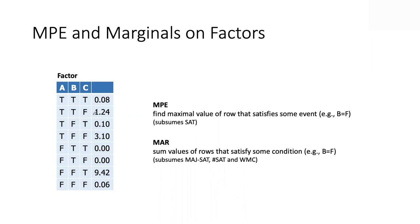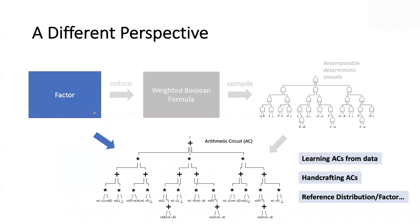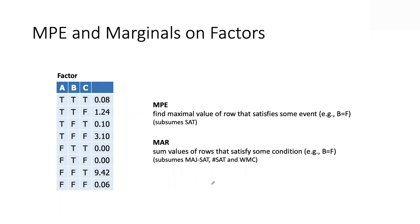We're going to fix this. Even though we're not going to talk about Bayesian networks or logic, we have to keep sight of the reference point. The reference point is a factor. Any computation you're doing has to be with respect to something. For us, that is a factor — a mapping from variable instantiations to non-negative numbers. A distribution is a special case of this, but it does not have to be a distribution. When I have a factor, I can define MPE and MAR.